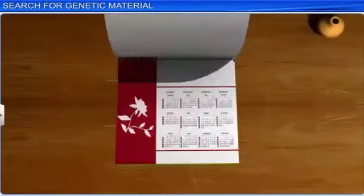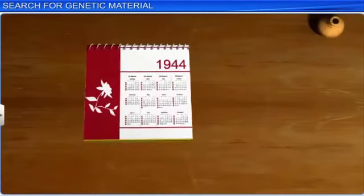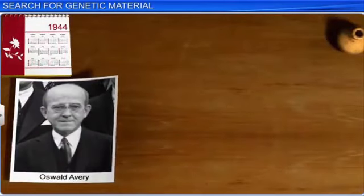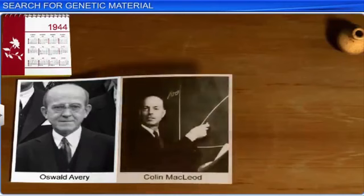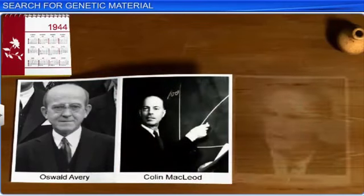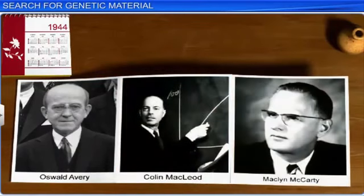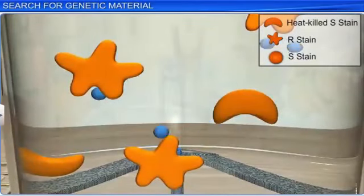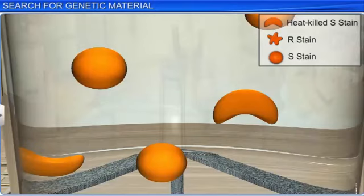Later, after 16 years, in 1944, a team of three scientists — Oswald Avery, Colin McLeod, and Maclyn McCarty — once again began research on the experiment that was once conducted by Frederick. At that time, they tried to identify the biochemical nature of the transforming principle in Frederick's experiment.